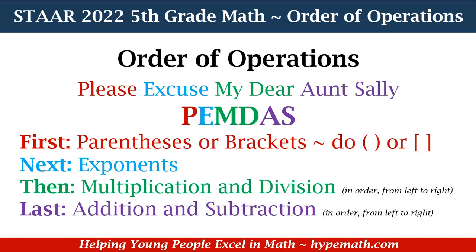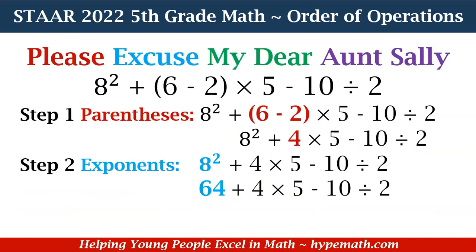Then we have multiplication and division in order from left to right. That means if you have a problem with both multiplication and division, you start from left to right solving the problem. And last, we have addition and subtraction, again in order from left to right.